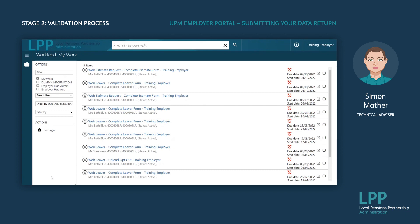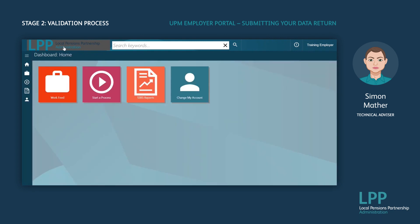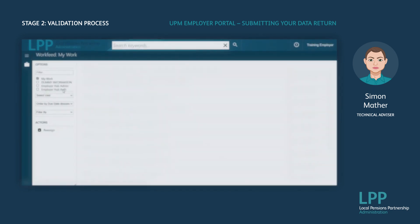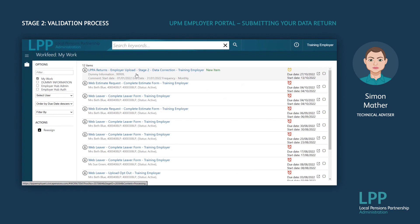The validation process is where UPM reviews the file you have uploaded to ensure the format is correct, all mandatory fields have been completed, and that the data is within the parameters detailed in the spec. It can take a few moments for the validations to run — in the meantime you will be directed to your work feed. After waiting a few moments, refresh the screen by clicking on the LPPA logo at the top left of the screen to return to the home page. If you click on your Work Feed tile again, you should eventually find that once the validations have been completed, your file is now at Stage 2: Data Correction.